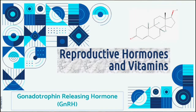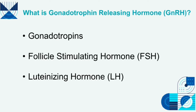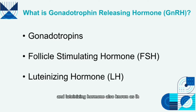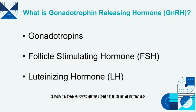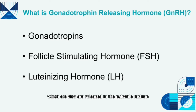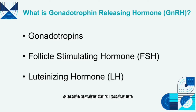Gonadotropin-Releasing Hormone, also known as GnRH, is a decapeptide hypothalamic releasing hormone responsible for stimulating the release of gonadotropins — follicle-stimulating hormone (FSH) and luteinizing hormone (LH) — by the anterior pituitary gonadotropes. GnRH has a very short half-life of 2–4 minutes, is released intermittently in pulses via a neural pulse generator in the hypothalamus, and this pulsatile release is crucial for proper synthesis and release of gonadotropins, which are also released in a pulsatile fashion. Both gonadotropins and gonadosteroids regulate GnRH production in a negative feedback manner.